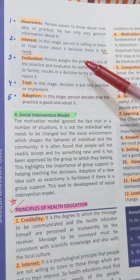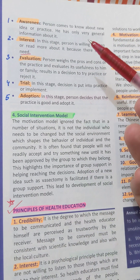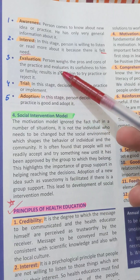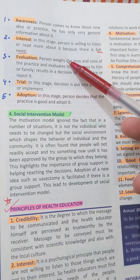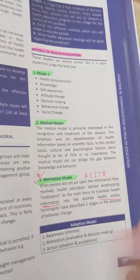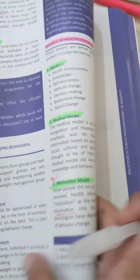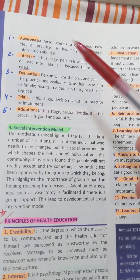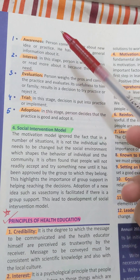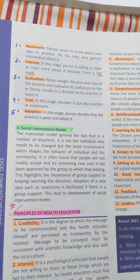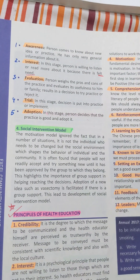The ITA model is also a motivation model. In the motivation model, there were three stages: awareness, motivation, and action. There are five steps seen in the ITA model: awareness, interest, evaluation, trial, and adoption. This is the motivation model for health education.